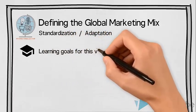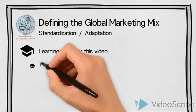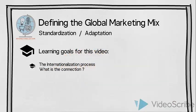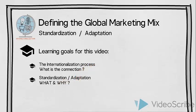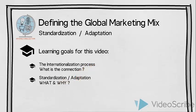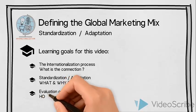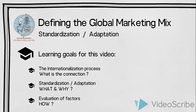Before we start, let us list the learning goals for this video. Firstly, the goal is to understand the connection between choice of the global marketing mix and the rest of the internationalization process. Secondly, we will gain an understanding of what it means to standardize or adapt an organization's marketing mix, and why an organization might be motivated to strive for a high degree of standardization. Thirdly, we will learn how to evaluate different factors that can help an organization decide the most suitable degree of standardization or adaptation of the different elements of their marketing mix.